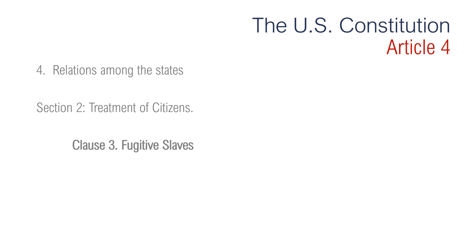Article 4, Section 2, Clause 3 is regarding fugitive slaves. It says no person held to service or labor in one state under the laws thereof, escaping into another, shall be discharged from such service or labor, but shall be delivered upon claim of the party to whom such service or labor may be due. This clause was struck down by the 13th Amendment, which abolished slavery in 1865.